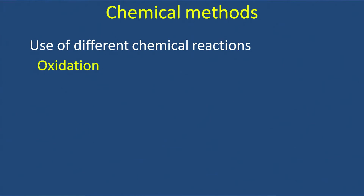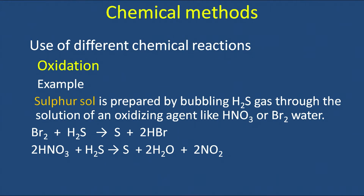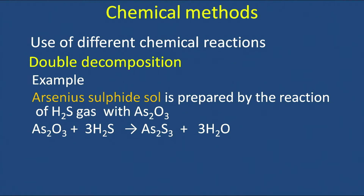Chemical methods use various types of chemical reactions. For example, oxidation reactions can prepare a sulfur sol: Br₂ + H₂S → S + 2HBr, or 2HNO₃ + H₂S → S + 2H₂O + 2NO₂. The sulfur produced by oxidation of hydrogen sulfide is obtained in colloidal form. Double decomposition can also be used — for example, reacting H₂S gas with arsenic oxide produces arsenic sulfide and water, and the arsenic sulfide formed is obtained in the colloidal state.